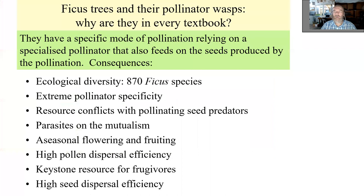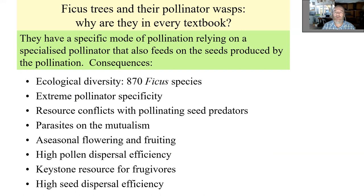What is so special about figs? Everything derives from a very specialized pollinating system based on the principle that the pollinator — a fig wasp — will also lay eggs into the flowers. So the fate of the progeny depends on the success of pollination. This system facilitates development of very specialized pollinators, because if you land on the wrong species and don't pollinate it, the fitness penalty is absolute — all your progeny will die.